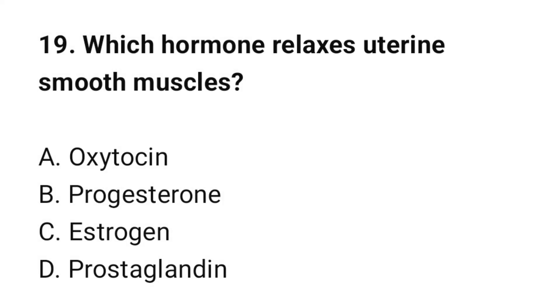Question number 19. Which hormone relaxes uterine smooth muscle? The correct option is B: progesterone.